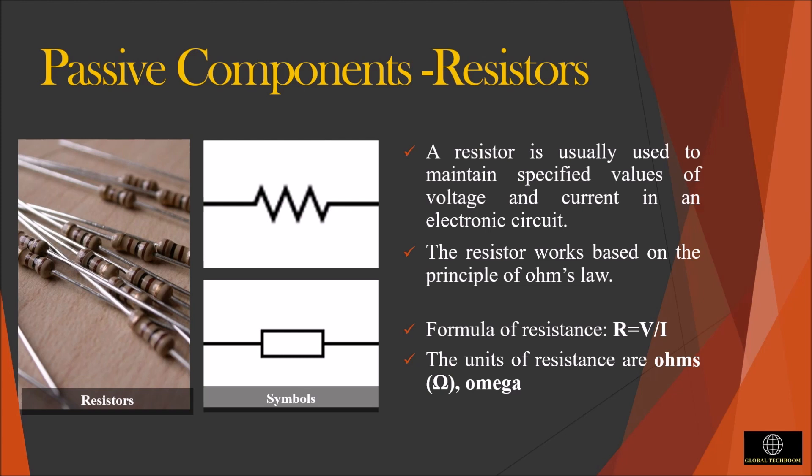So we can say that a resistor is a two-terminal passive electronic component which is used to oppose the current. The resistor can be represented by the following symbols. It also has a property called resistance. The resistance is a property of opposing the flow of electrons in a conductor or semiconductor. The formula of resistance is R = V/I, where V is the voltage and I is the current.